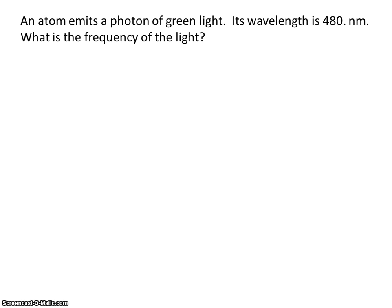Here's some useful information. This will help you along the way. One meter equals a billion nanometers. This is Planck's constant. And this is the speed of light.